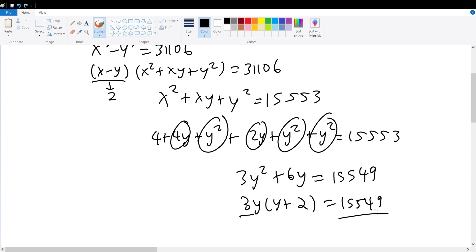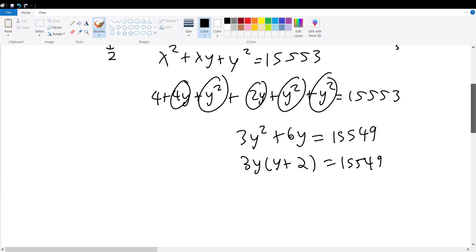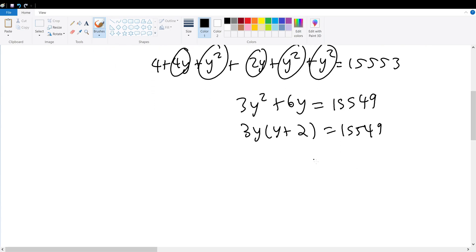Is this term potentially divisible by 3? Well, 1 plus 5 is 6, 6 plus 5 is 11, 11 plus 4 is 15, plus 9 is 24. 24 divided by 3 equals 8, so it's a multiple of 3. Therefore, y times y plus 2 must give me 5183.